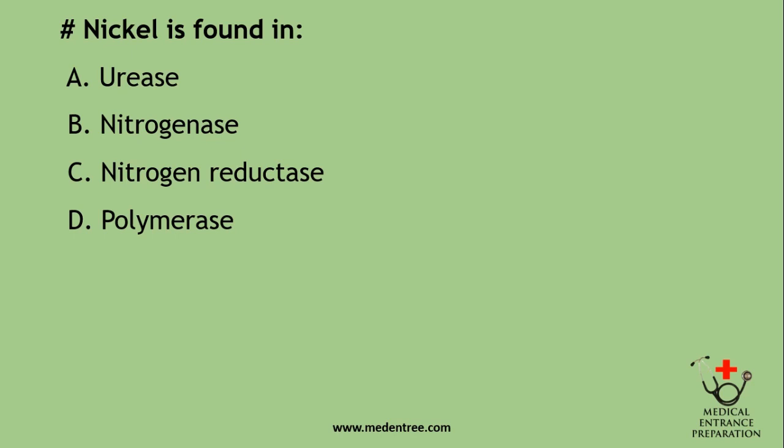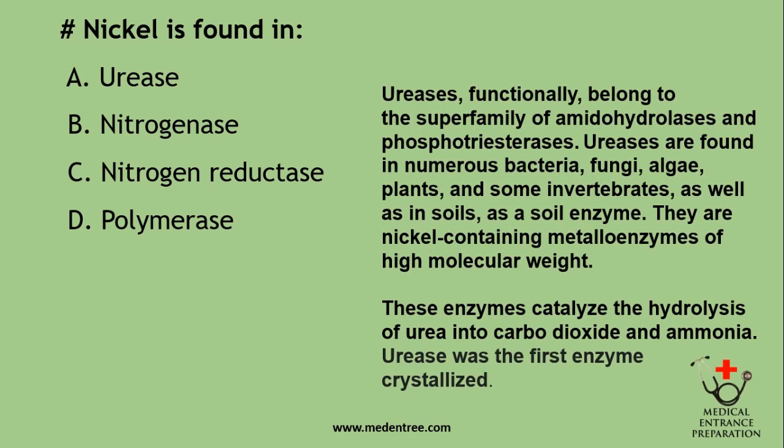Nickel is found in which enzyme? Urease, nitrogenase, nitrogen reductase, or polymerase? The correct answer is Urease. Ureases functionally belong to the superfamily of amidohydrolyases and phosphotriesterases. They are found in numerous bacteria, fungi, algae, plants, some invertebrates, and in soils. They are nickel-containing metalloenzymes of high molecular weight that catalyze the hydrolysis of urea into carbon dioxide and ammonia. It is also notable that urease was the first enzyme to be crystallized.